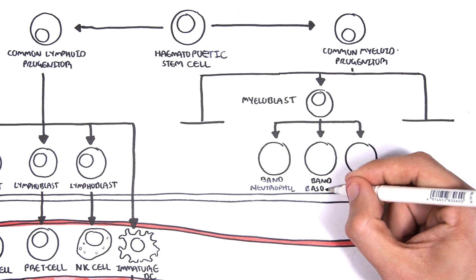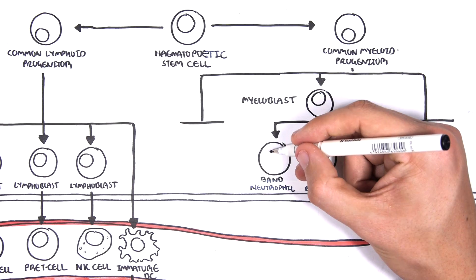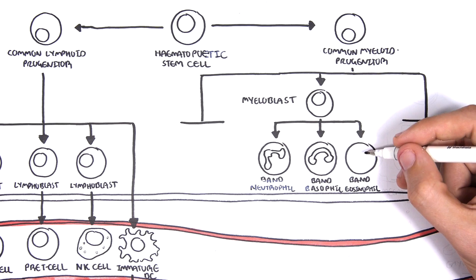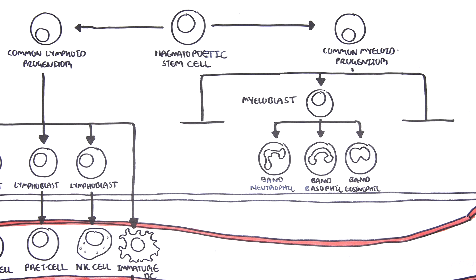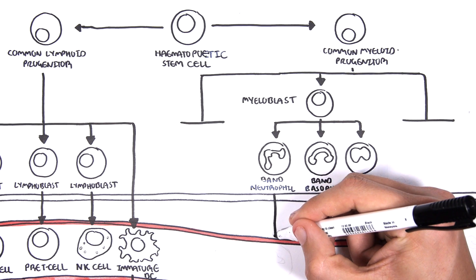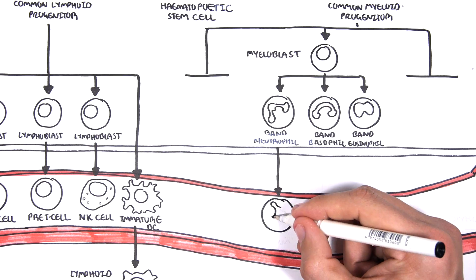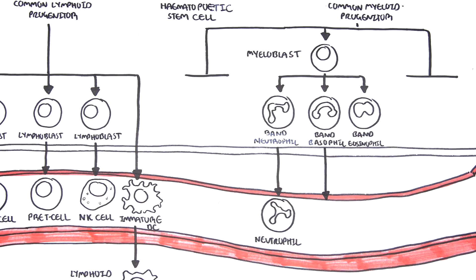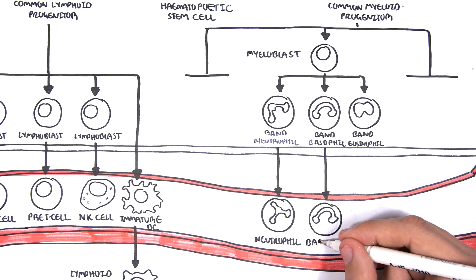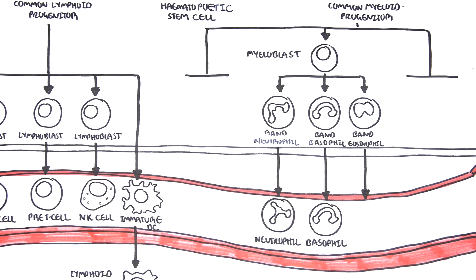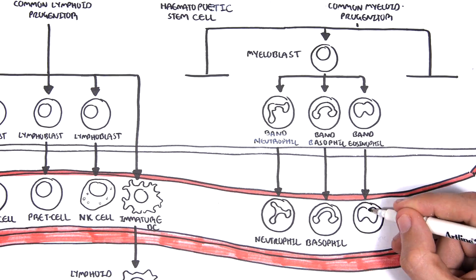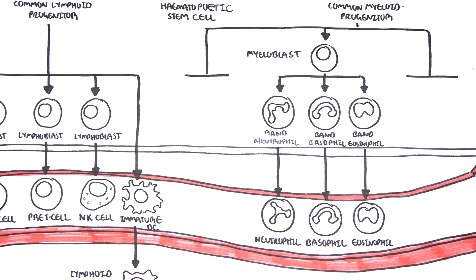The granulocytes can be band neutrophils, band basophils, and band eosinophils. These granulocytes are band cells because they are immature, but once they enter circulation, they mature and become neutrophils, basophils, and eosinophils respectively. Neutrophils are important in the acute response to infection and inflammation. Basophils are important in allergy and parasitic infections. Eosinophils are also important in allergies and sensitivity.